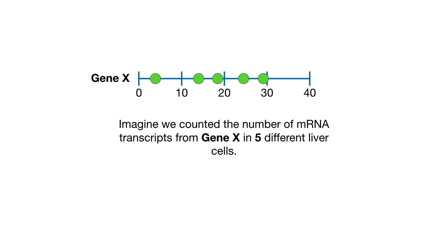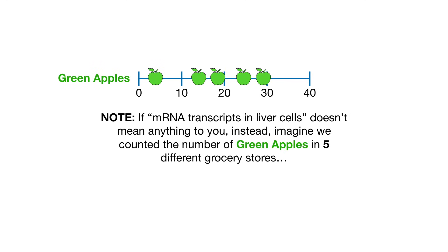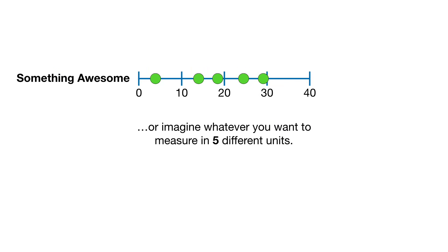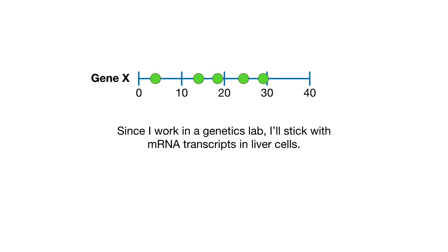Now, imagine we counted the number of mRNA transcripts from gene X in five different liver cells. Note, if mRNA transcripts in liver cells doesn't mean anything to you, instead imagine we counted the number of green apples in five different grocery stores. Or you could imagine counting green t-shirts in five different clothing stores, or whatever you want to measure in five different units. Since I work in a genetics lab, I'll stick with mRNA transcripts in liver cells.